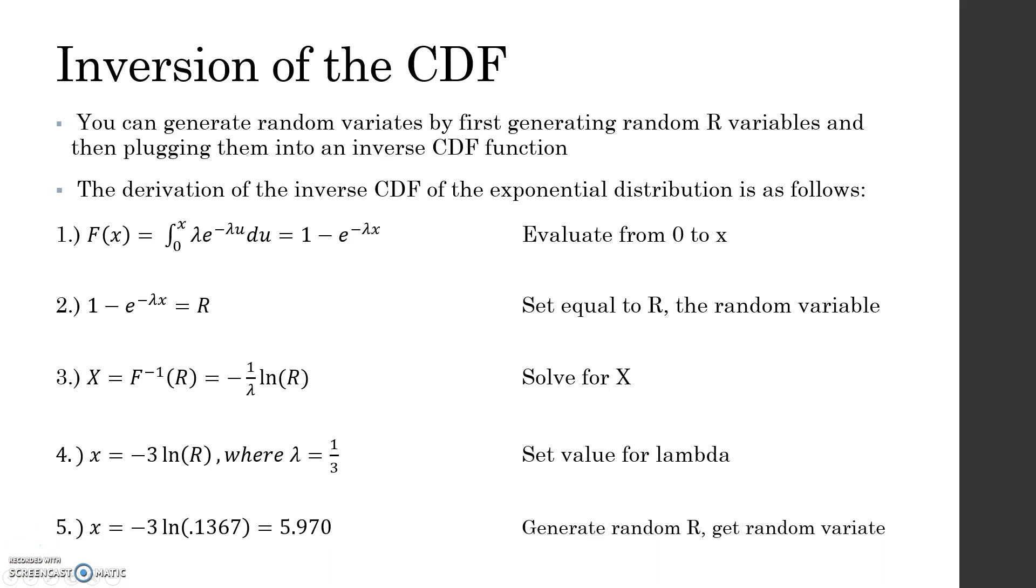The first method we're going to talk about is the inversion of the CDF. You can generate random variance by first generating random R variables and then plugging those into an inverse CDF function. The derivation of the inverse CDF of the exponential distribution is as follows.